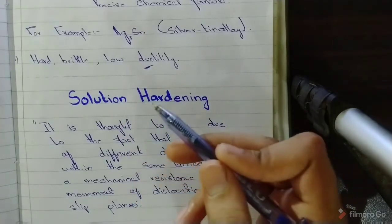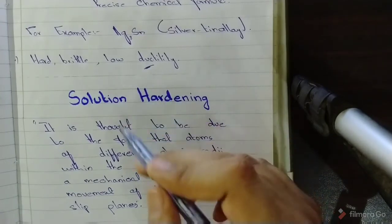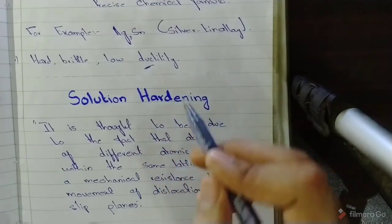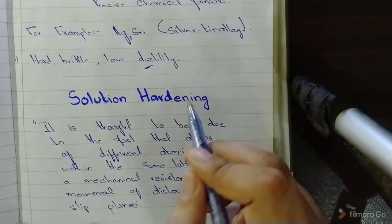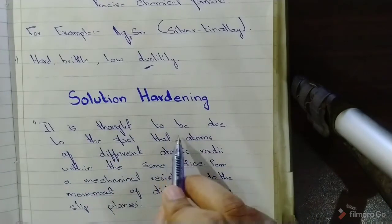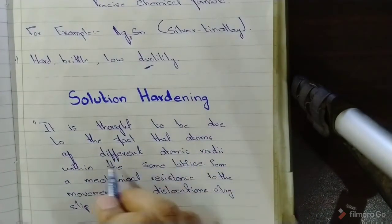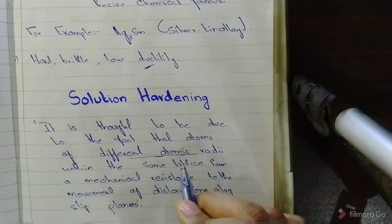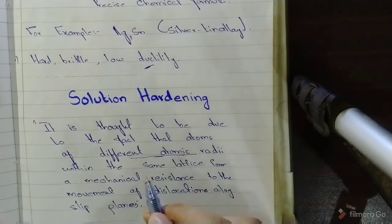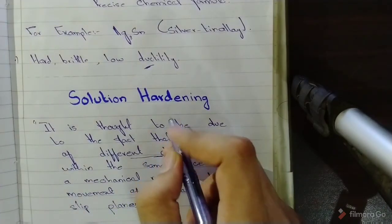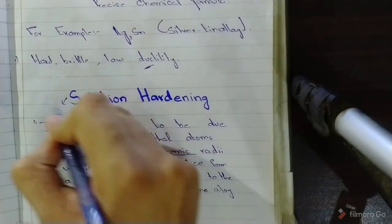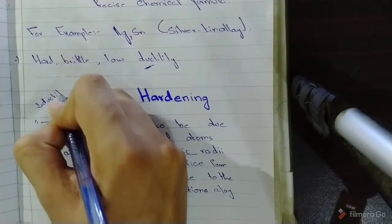Basically, it is thought to be due to the fact that atoms of different atomic radii - because there are two or more metals mixed within the same lattice - form a mechanical resistance to the movement of dislocations along slip planes. So basically, solution hardening will reduce the ability of ductility.